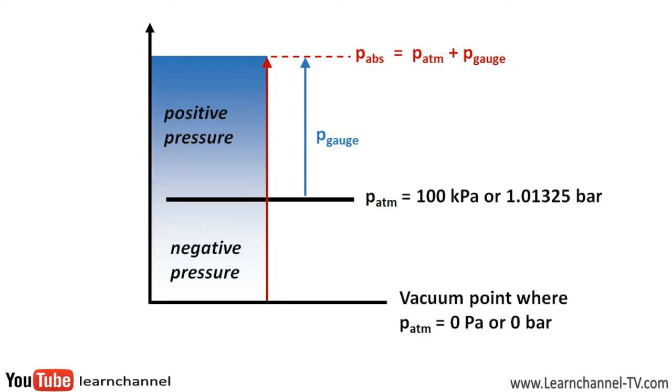This absolute pressure is referenced against a perfect vacuum. By the way, we have an absolute vacuum in space. The gauge pressure, on the other hand, is referenced against ambient air pressure. As the name suggests, it is the pressure value that you read on the pressure gauge, also called a manometer. For example, our compressor delivers a pressure of 7 bar, which is what we read out at the pressure gauge. So actually, we have an absolute pressure value of about 8 bar.